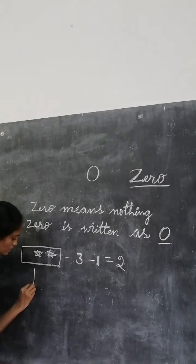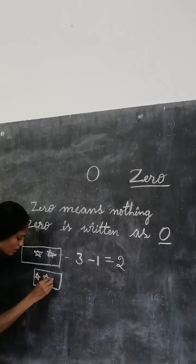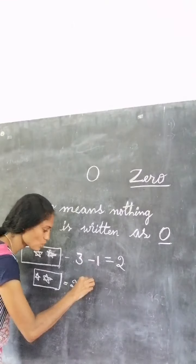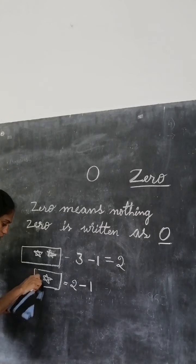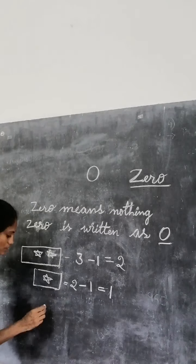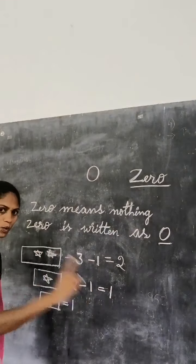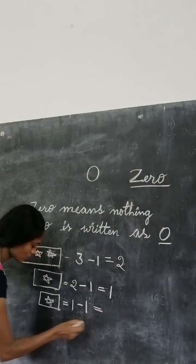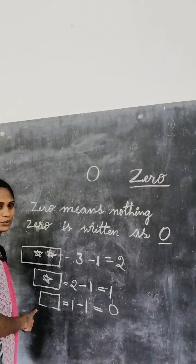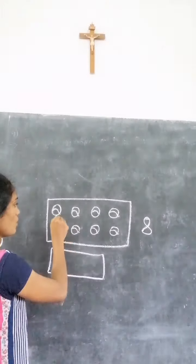Ok now again, in the 2 stars — how many stars are here? There are 2 stars. From that 2 stars minus 1 star, how many remain? 1. Now from the 1 star, how many stars are here? 1. From that I will minus 1. How many remain? 0.